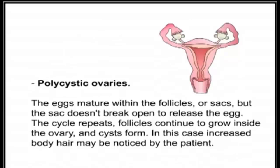Polycystic ovaries: the eggs mature within the follicles or sacs, but the sac doesn't break open to release the egg. The cycle repeats, follicles continue to grow inside the ovary, and cysts form. In this case, increased body hair may be noticed by the patient.